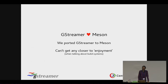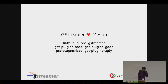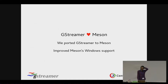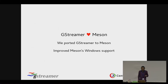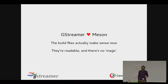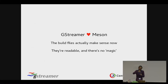So GStreamer ported to Meson. We ported libffi, glib, orc — a library GStreamer uses for runtime compilation — and the basic plugins. In the process, we also improved Meson's GStreamer Windows support. We had to make some changes to how library naming is done — naming should be compiler-dependent: if you're building with MinGW it's libfoo.dll, but if you're building with MSVC you want foo.dll, because that's the MSVC standard. Now that we have Meson build files, everything makes sense — you don't have mystery CFLAGS or LDADD variables cascading through the build system.